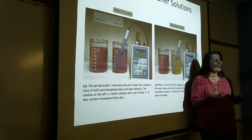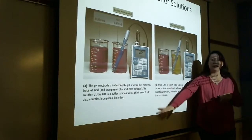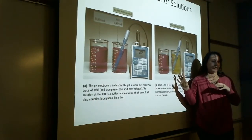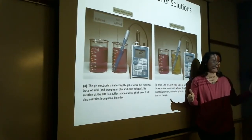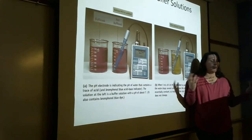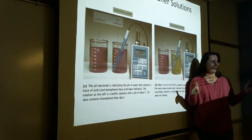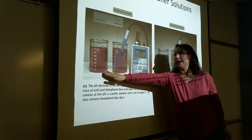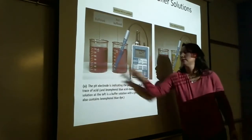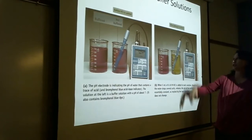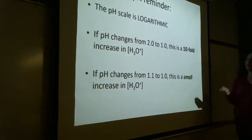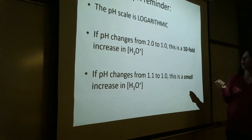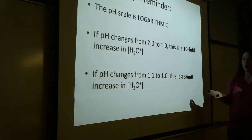Does everyone understand the concept of a buffer? If you don't understand the concept, none of the math is going to matter. A buffer contains an acid component and a base component, so any acid or base we add can be consumed. Buffering means if I add acid or base, pH stays constant. Unbuffered means pH is off to the races. The logarithmic scale means dropping from pH 2 to 1 is a 10-fold increase in acidity.